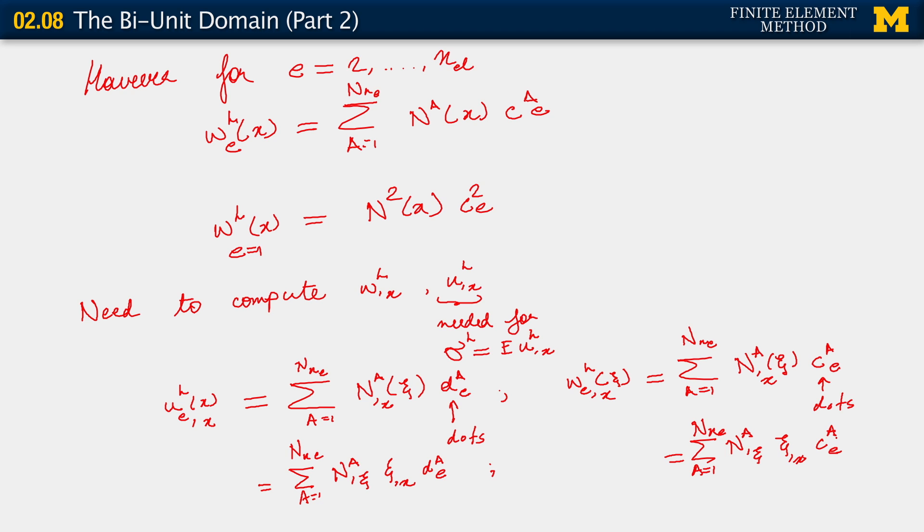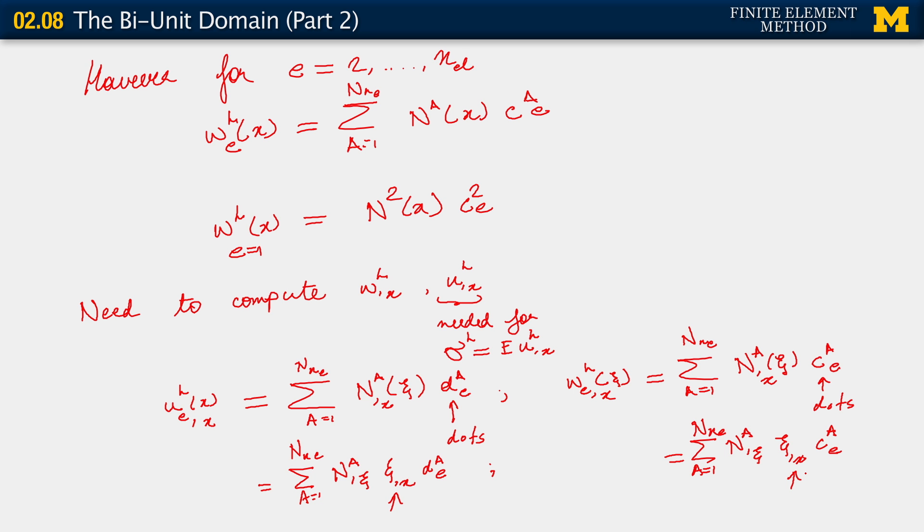Now this is useful because it tells us how we can compute our gradients of required fields. Except for the fact that we may say, well how do I actually go around computing that quantity? How do I write the derivative of my position in the bi-unit domain with respect to my physical coordinate x? Think about it. We'll come to it, but we will do it in the next segment.